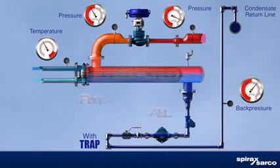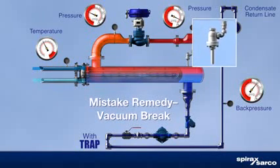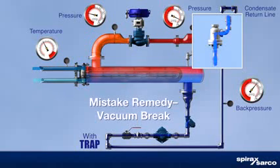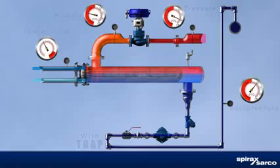Some operators address vacuum in the steam space by installing a vacuum breaker on the shell. This practice introduces atmospheric gases that dissolve readily into the cooler condensate, forming corrosives that attack wetted surfaces while doing nothing to eliminate the stall condition.